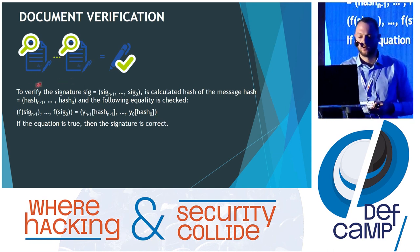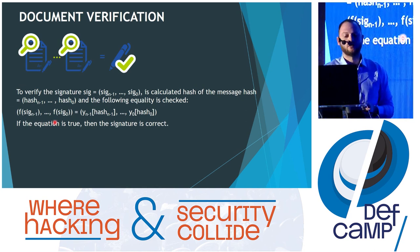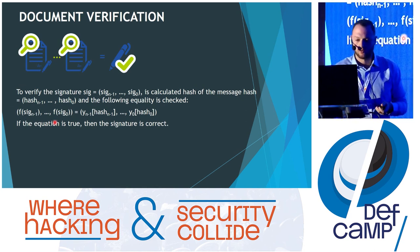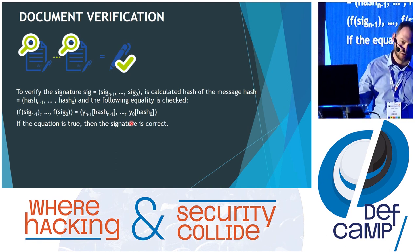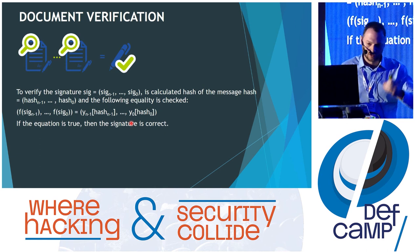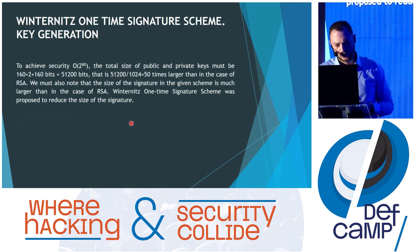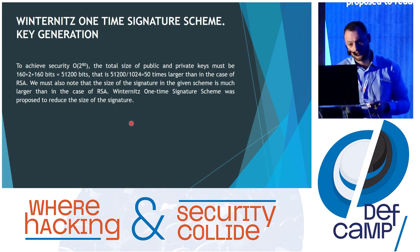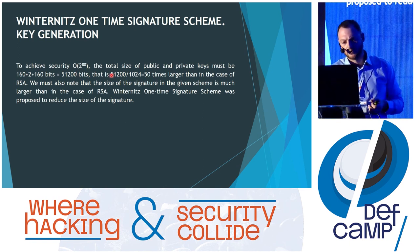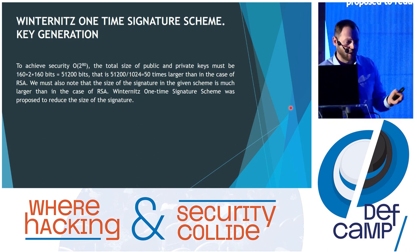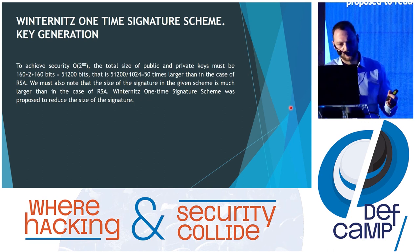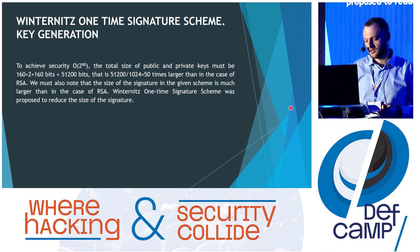To verify the signature, we apply the following equality: we apply the one-way function to our signature and compare it with a hash of the message. We hash the message first because it can be of any size, to get an n-bit message. In the case of Lamport, to achieve a minimum security of 2^128, the total size of the public keys must be 51,200 bits — that is 50 times larger than in the RSA case. Also, the signature length is much bigger than in RSA.